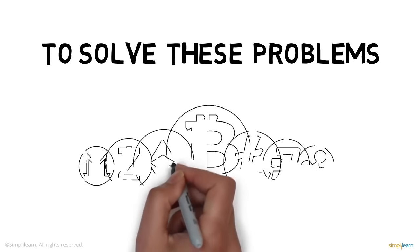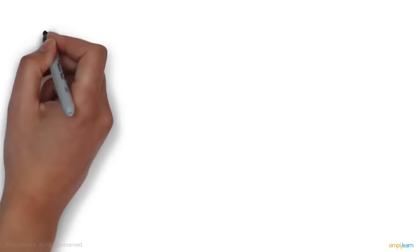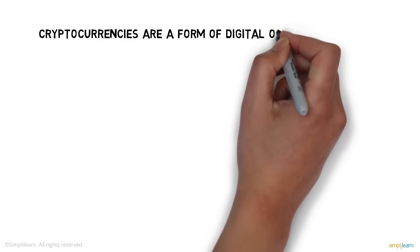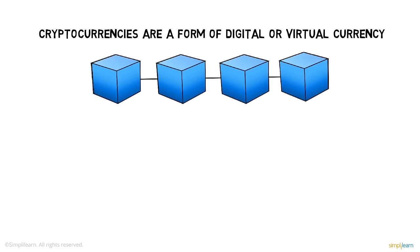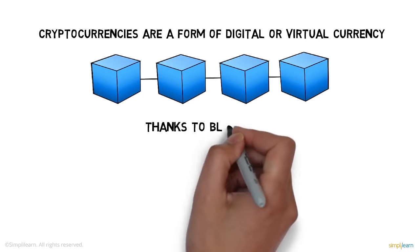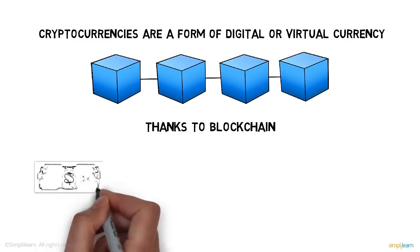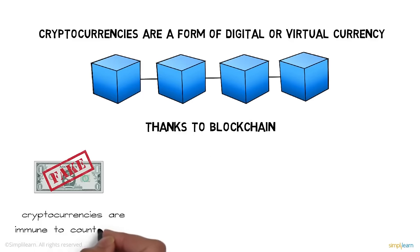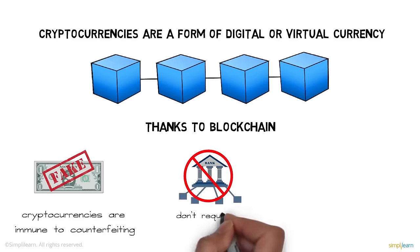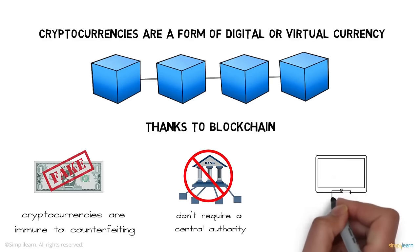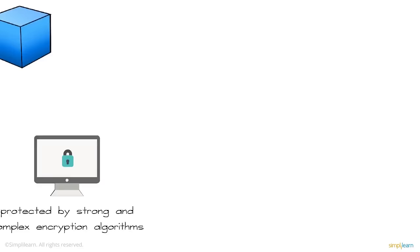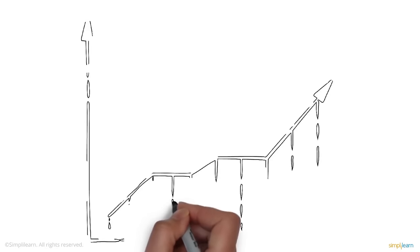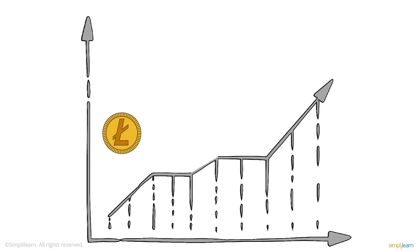To solve these problems, the concept of cryptocurrency came into existence. Cryptocurrencies are a form of digital or virtual currency that run on a technology known as blockchain. Thanks to blockchain, cryptocurrencies are immune to counterfeiting, don't require a central authority, and are protected by strong and complex encryption algorithms.